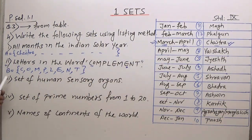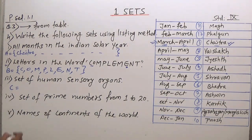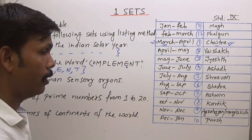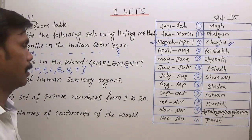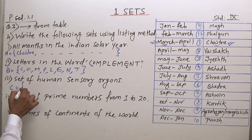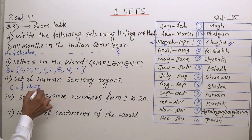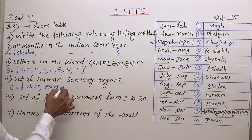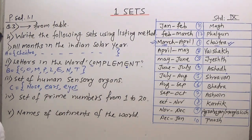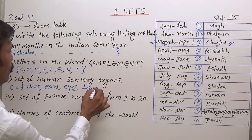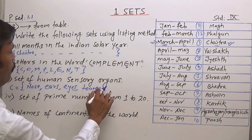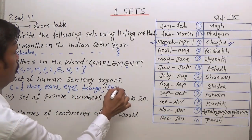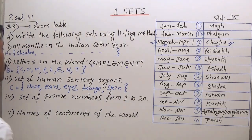The third question is set C: set of human sensory organs — the organs with which we can sense. These are: nose, ears, eyes, tongue, and skin. This is the list of human sensory organs.